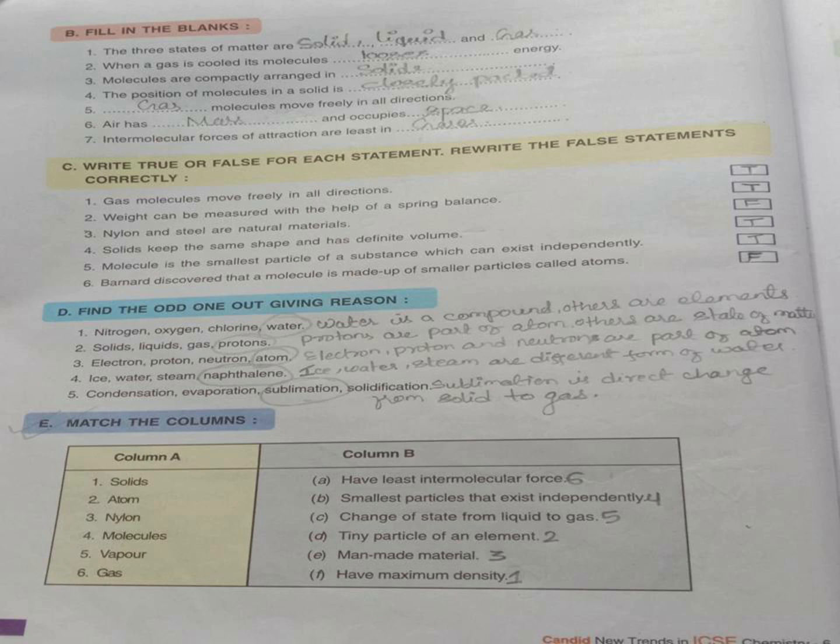Nylon and steel are natural materials. False, because they are man-made materials. Number 4, solids keep the same shape and have definite volume. True.